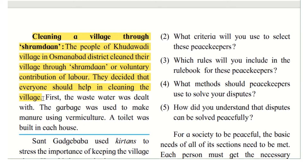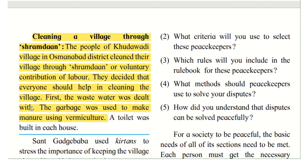There was a problem of garbage - the boy couldn't go to school because garbage was piled everywhere. They decided everybody should help out. First, the waste water was dealt with. Then the garbage was used to make manure using vermiculture - worms are introduced to the soil mixed with garbage. As the worms grow, they eat up the garbage and make the soil more fertile, which can be used as manure for plants and crops.